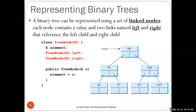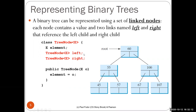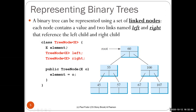A binary tree is represented using linked nodes. The TreeNode class, parameterized for element type E, contains the element and two references: a left TreeNode and a right TreeNode. This is similar to a doubly linked list with references to left and right children. The TreeNode class is typically a static inner class of the tree class, so it can represent nodes for that specific tree.